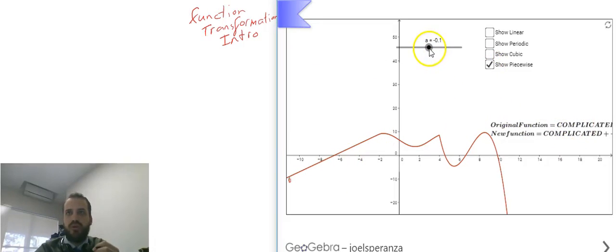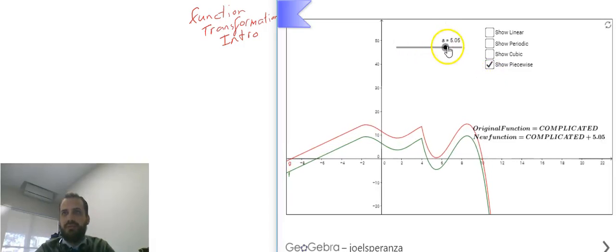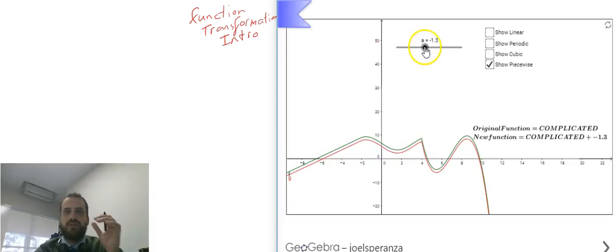Now we can transform the complicated function by adding something to the end of it. You can see I'm moving it up and moving it down. That's a transformation.